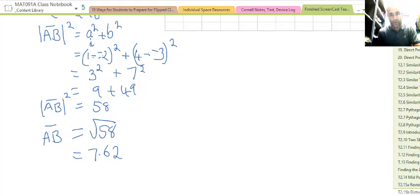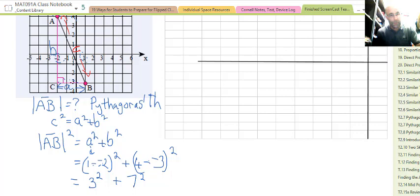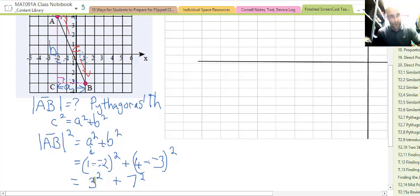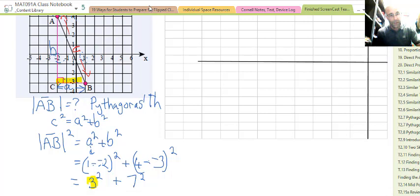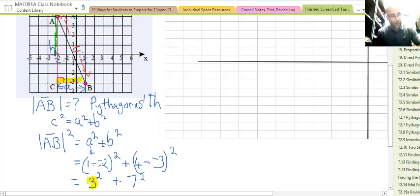We can go back and check that some parts of our answer are reasonable. We can check the reasonableness of the 3 bit because if we count that, we go 1, 2, 3. We can check the reasonableness of the 7 bit: 1, 2, 3, 4, 5, 6, 7.